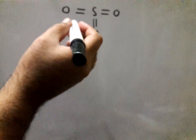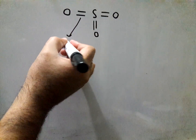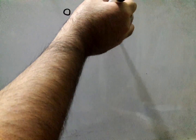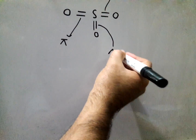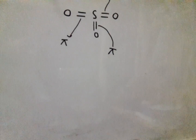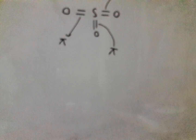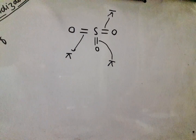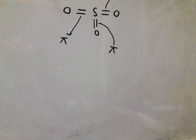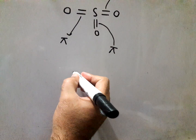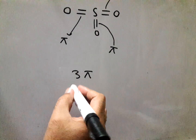The first way is to look at how many pi bonds there are. You can see one pi bond and one sigma bond, another pi bond and sigma bond, and another pi bond and sigma bond. So there are three pi bonds in total.